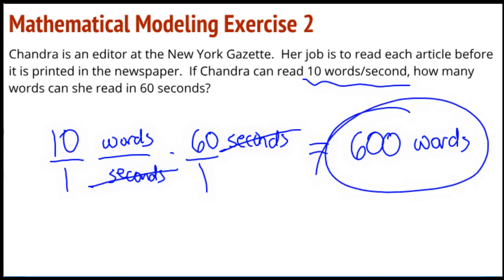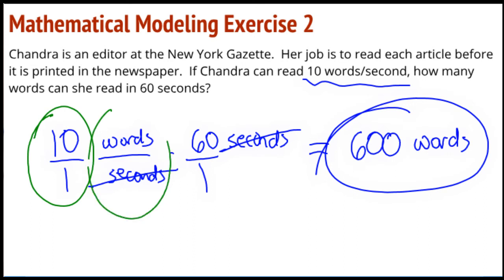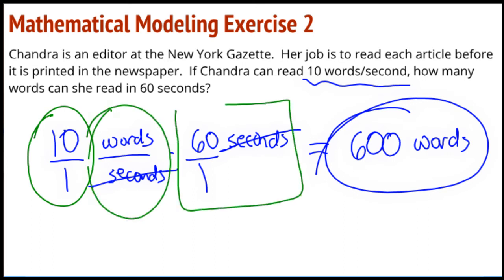Here is my unit rate. Here is my rate unit. And right here I have an extension — I'm going to keep doing this for 60 seconds. I'm setting this up as a multiplication expression.